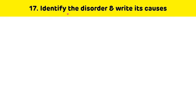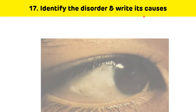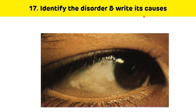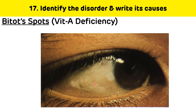Next question: identify the disorder and write its causes. This condition is again associated with vitamin A deficiency. There is a triangular grayish-white deposit seen in the conjunctiva — it is a Bitot's spot, which occurs due to vitamin A deficiency.